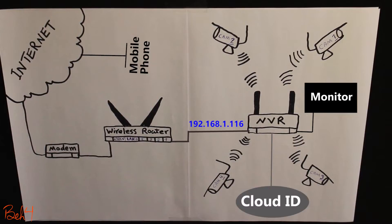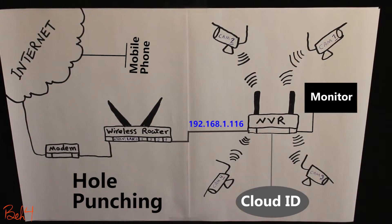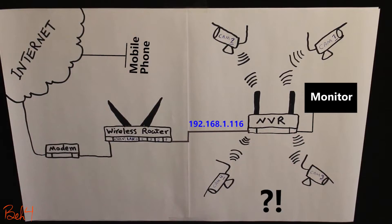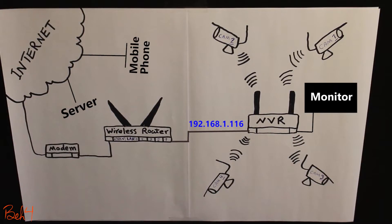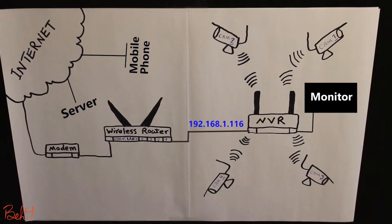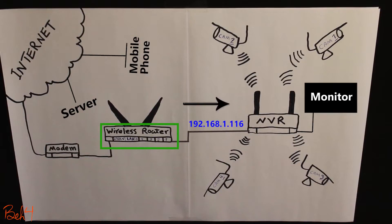It could be a technique called hole punching. A simple explanation for that would be that a third-party server is used to share and relay some information between the two endpoints — like internal and external addresses and port numbers. With the help of this information, they can somehow manage to punch a hole in the NAT device and access the NVR.